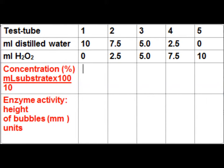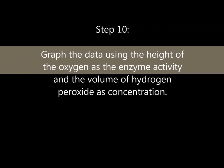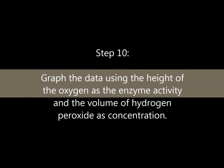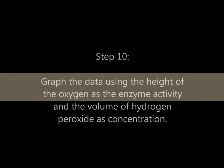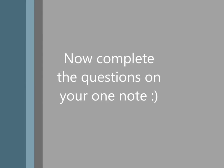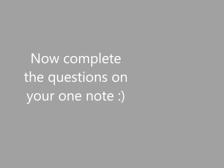Step 9: Record results into a table. Step 10: Graph the data using the height of the oxygen as the enzyme activity and the volume of hydrogen peroxide as concentration. Now complete the questions on your OneNote.